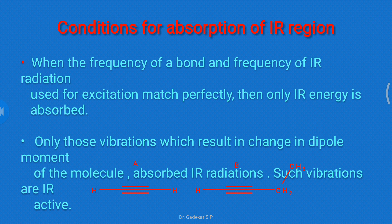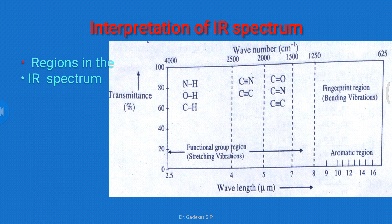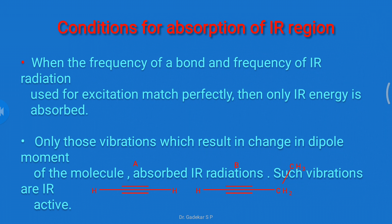First, the condition for absorption of IR region. Suppose molecules are exposed to IR radiation. Those molecules absorb IR radiation, and this absorption depends on two factors. The first factor: when the frequency of the bond and the frequency of the IR radiation used for excitation match perfectly, then only IR energy is absorbed.